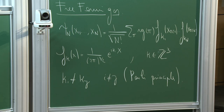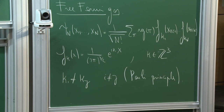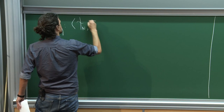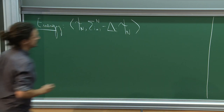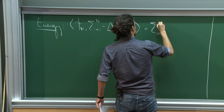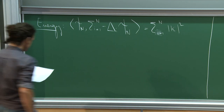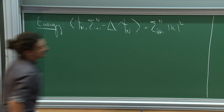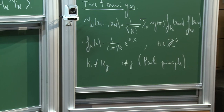Computing the ground state in the absence of interaction amounts to finding the choice of k's that minimizes the energy of the state. The energy of any such Slater determinant is just the kinetic energy — a sum over i from 1 to N of |k_i|^2 — where all k_i are distinct points in Z^3.